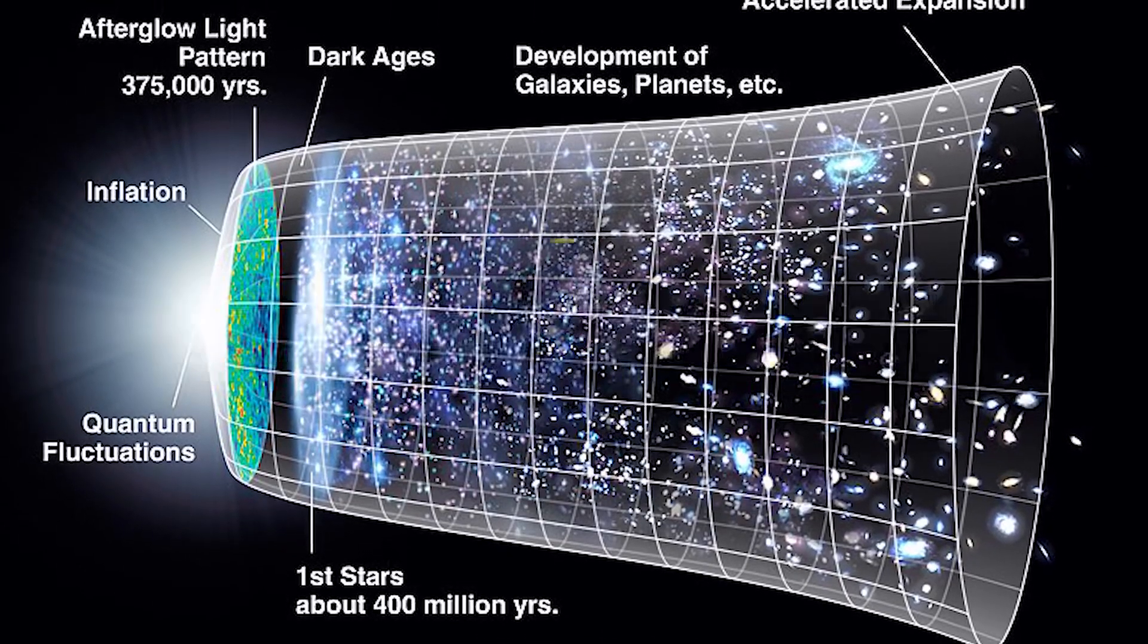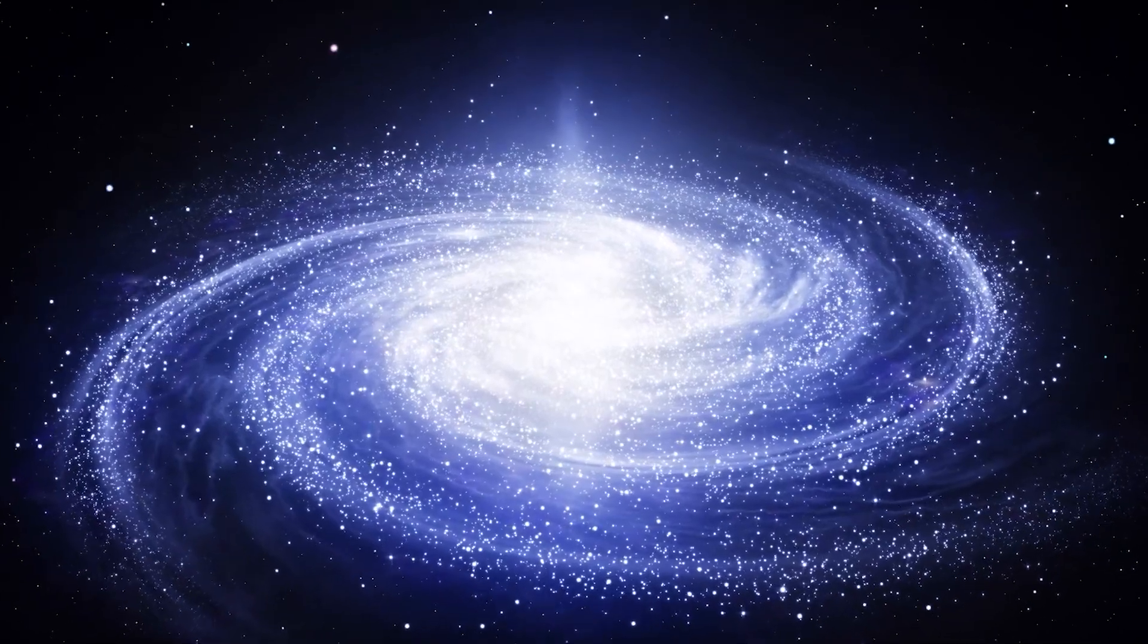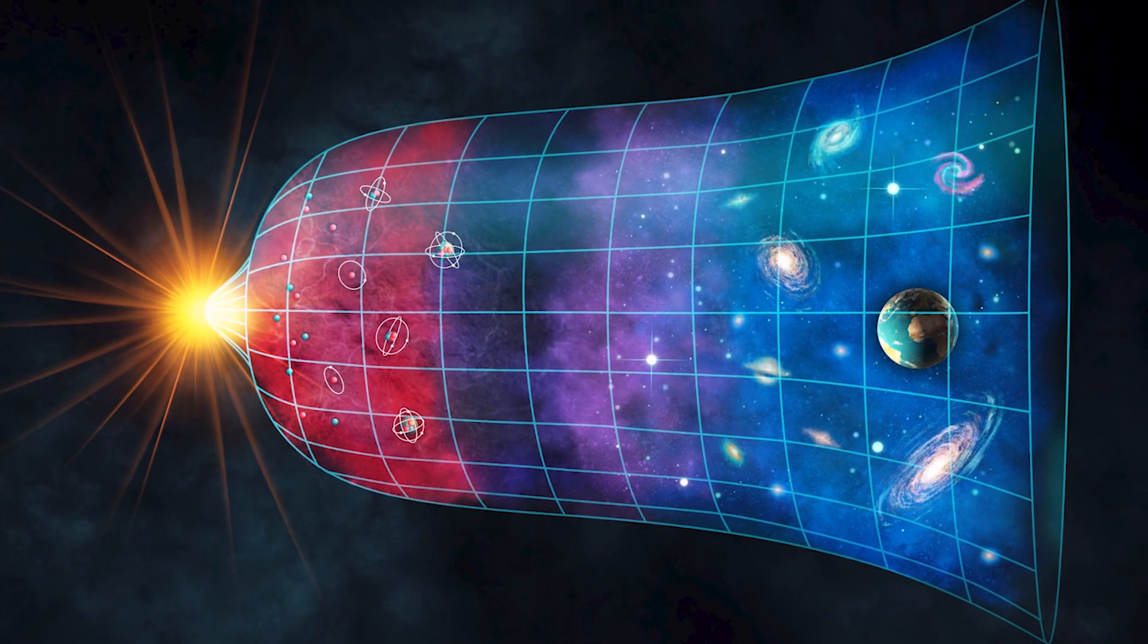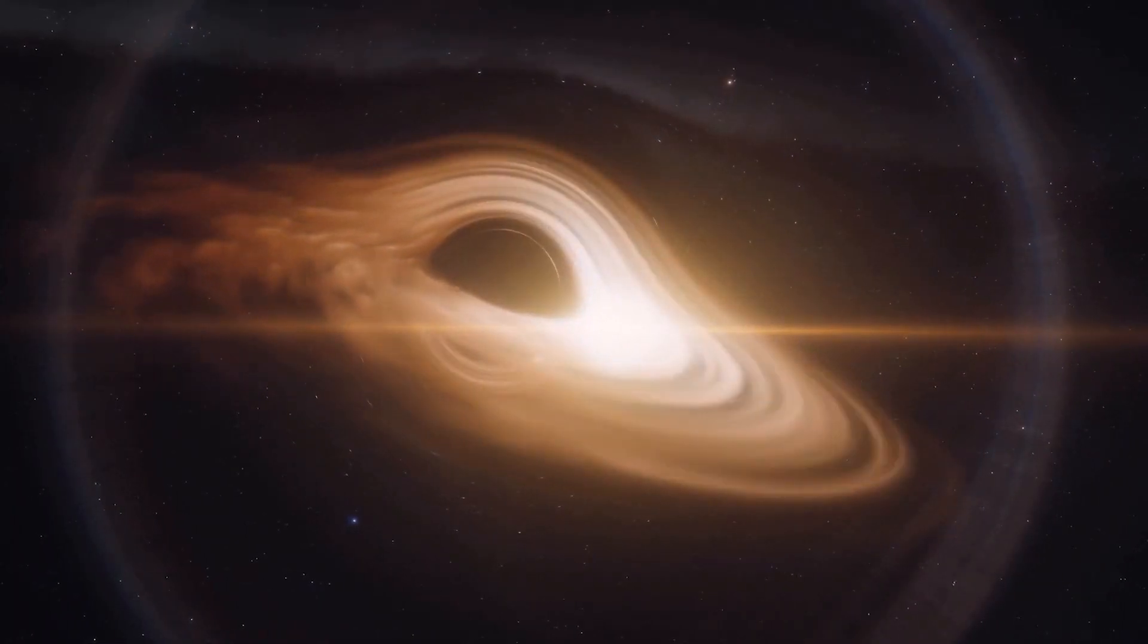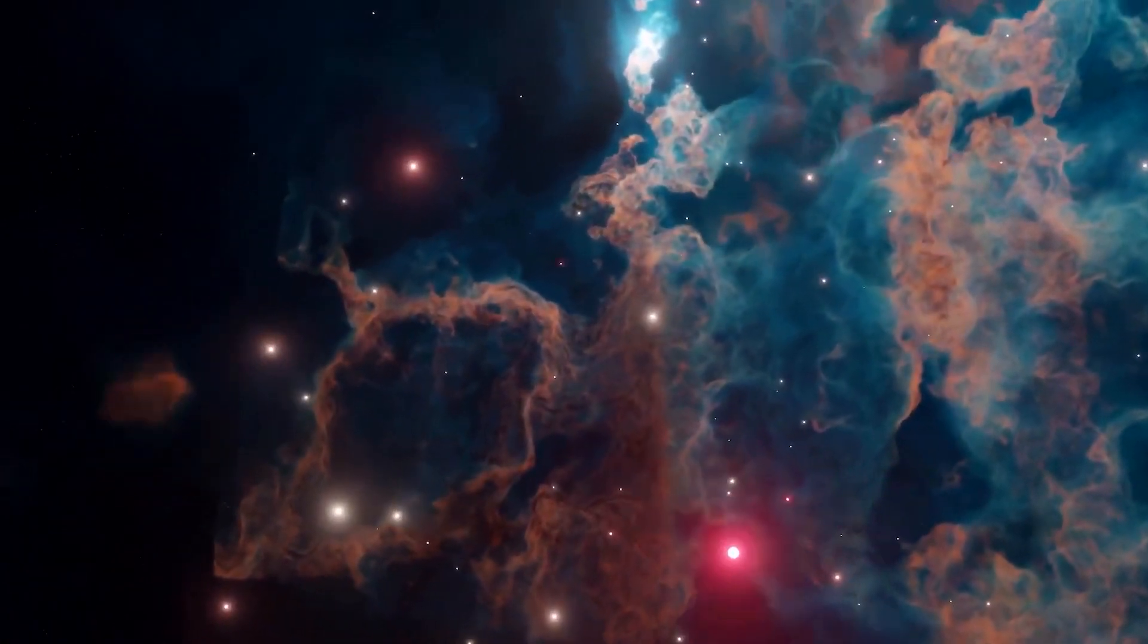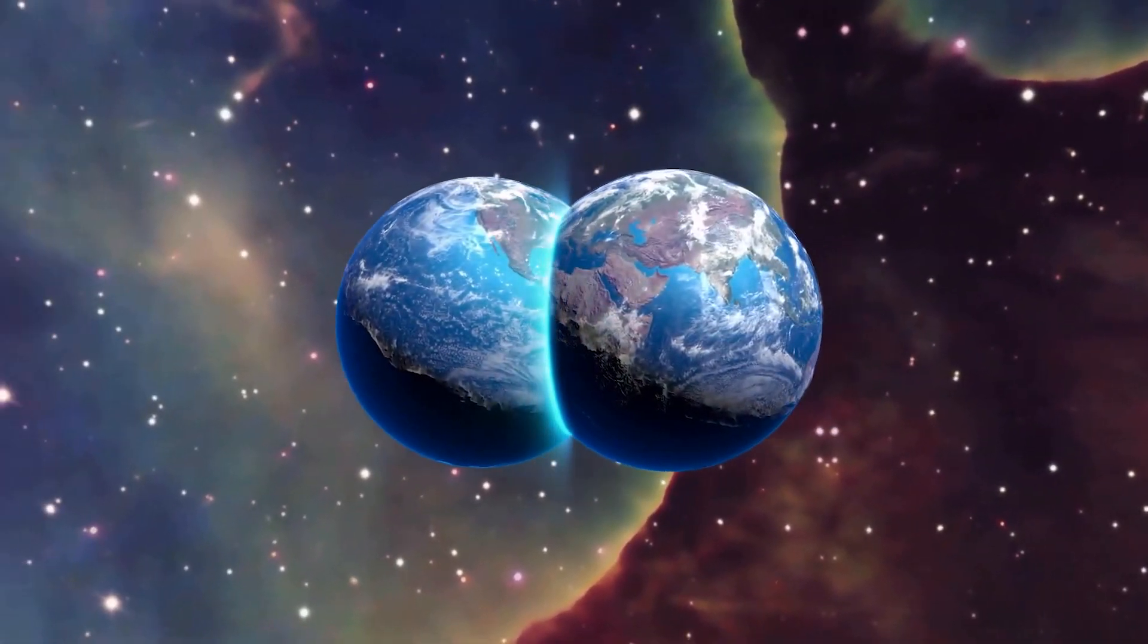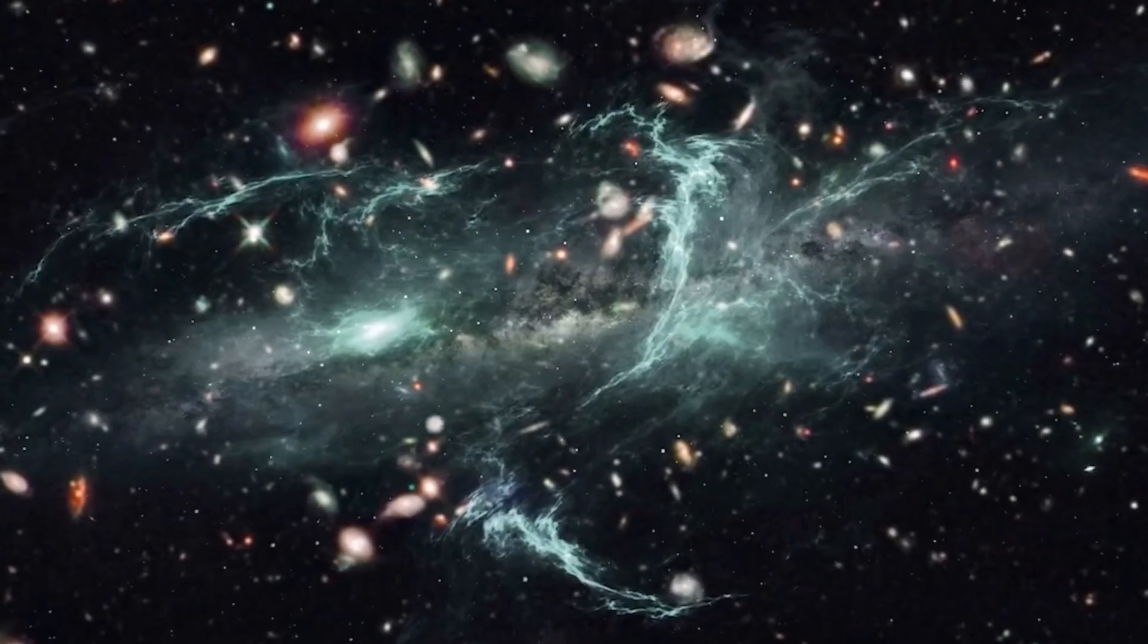As time passes, the universe continues to expand, which means the observable universe keeps growing. However, there is a limit known as the Hubble volume, named after the telescope that has provided us with some of the most distant views of the universe. Beyond the Hubble volume lies uncharted territory, an infinite expanse. This realm could hold matter, energy, galaxies, and more, mirroring our observable universe. The possibilities are staggering, including the existence of Earth-like planets and alternate versions of ourselves.